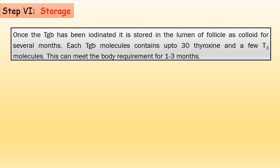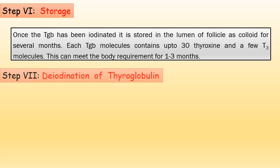The hormone T3 and T4 is produced, and the next step is storage. Once the thyroglobulin has been iodinated, it is stored in the lumen of the follicle as colloid for several months. Each thyroglobulin molecule contains up to 30 T4 and a few T3 molecules. This can meet the body's requirement for one to three months.